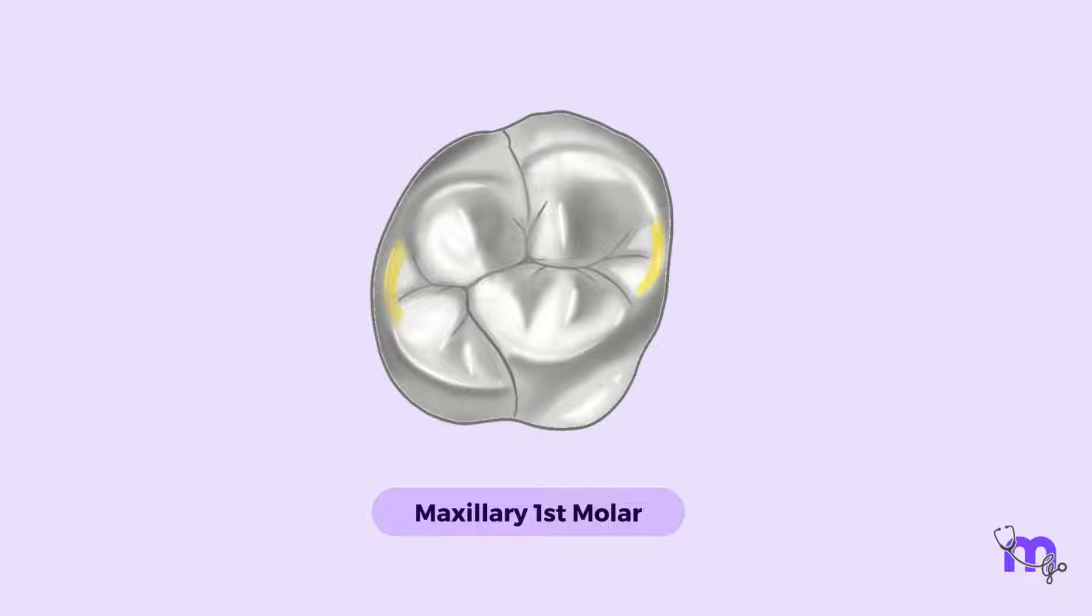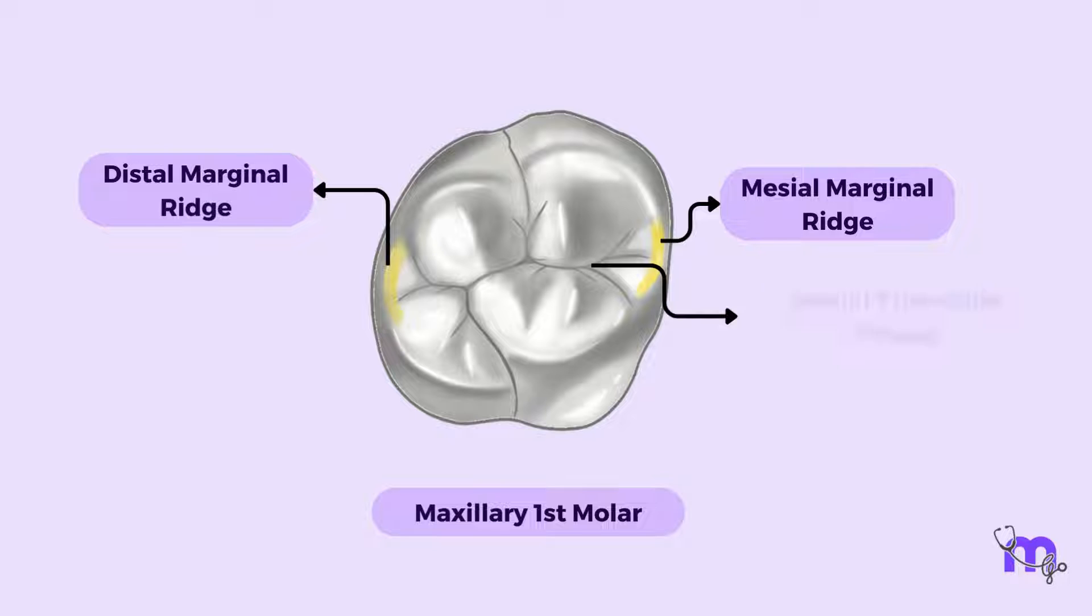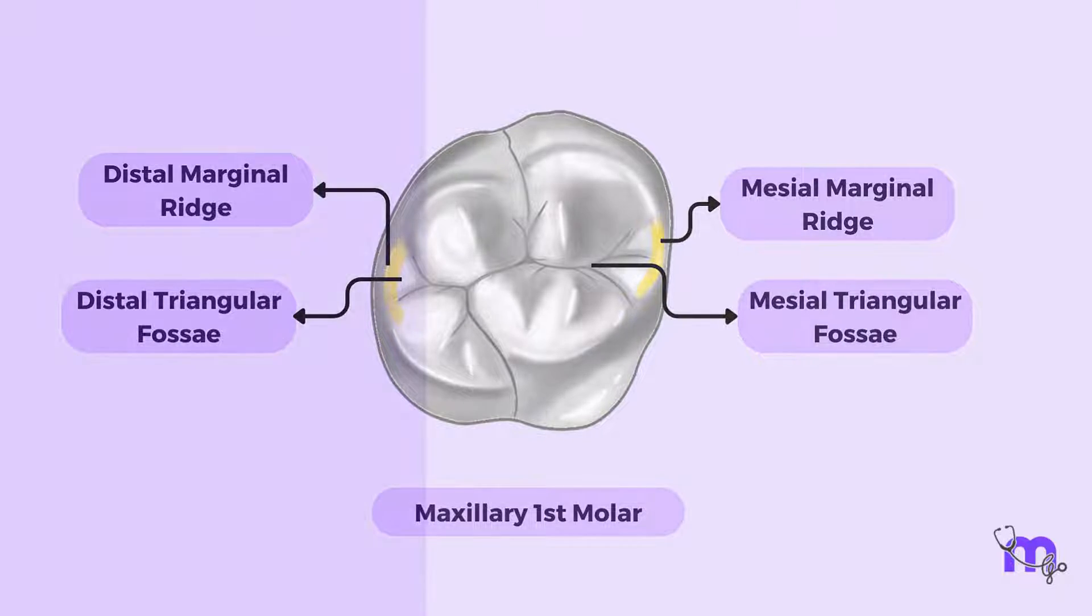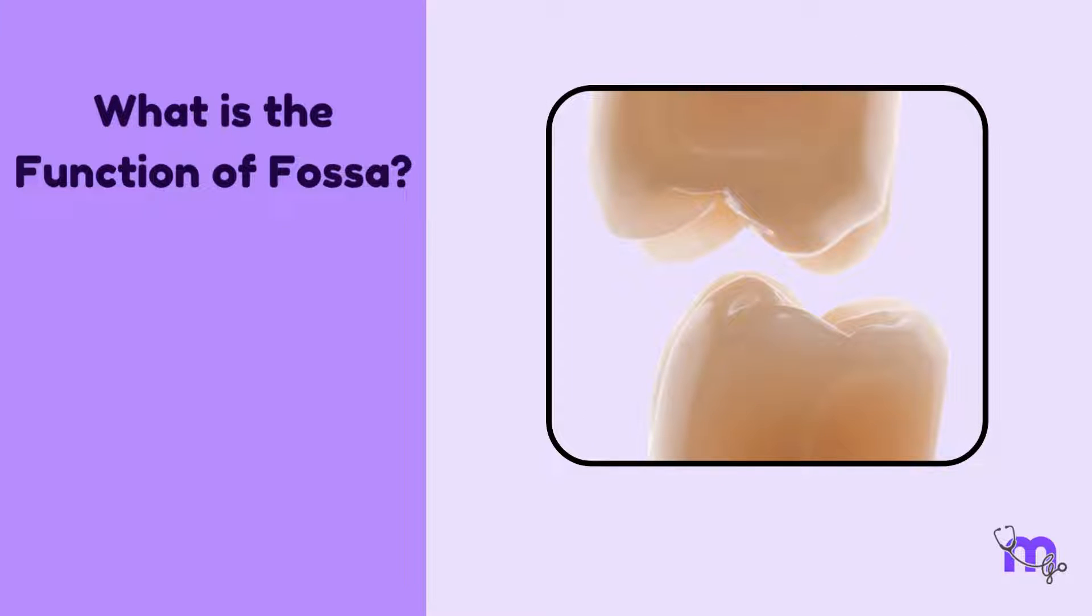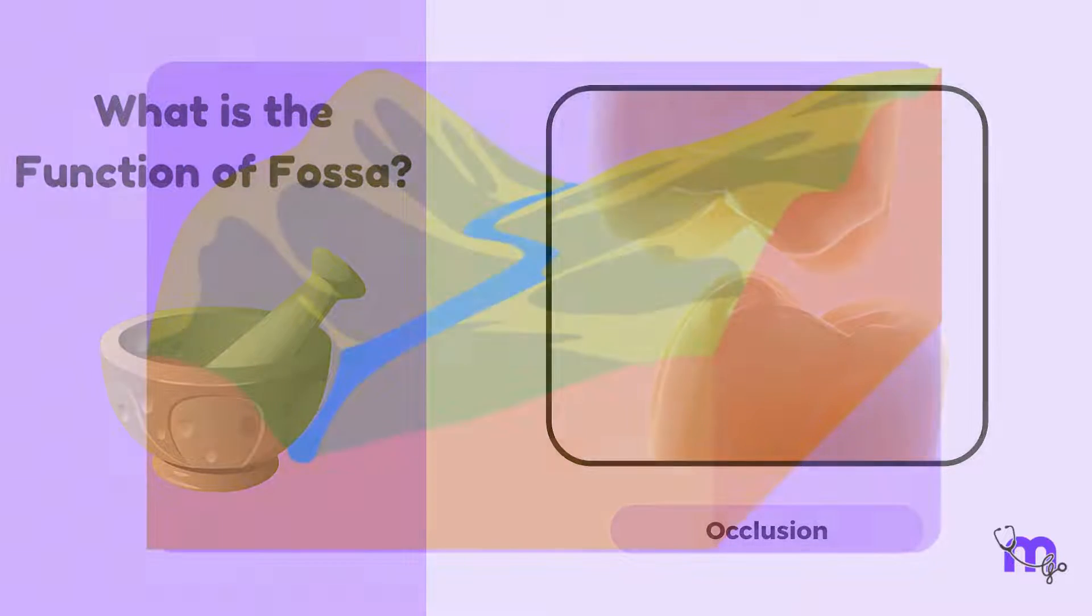Now, look at areas adjacent to mesial and distal marginal ridges. These are also like small triangular spaces. So, fossa present on the occlusal surfaces of posterior teeth, mesial, or distal to marginal ridges are referred to as the mesial and distal triangular fossa. What is the function of the fossa? The cusps and fossa of opposing teeth are like pestle and mortar. They crush and grind the food. This interrelationship is called occlusion.